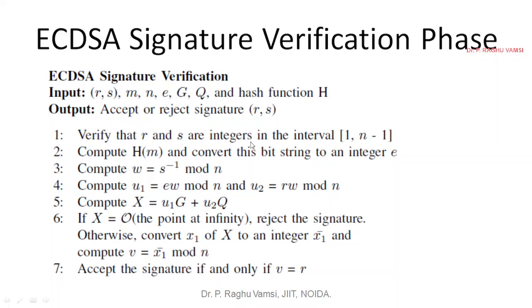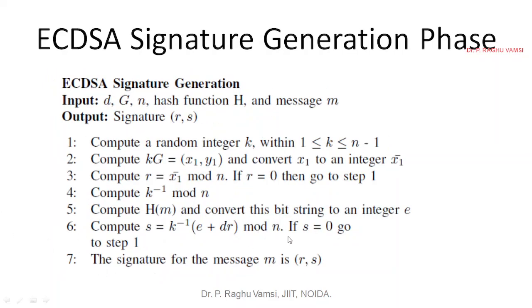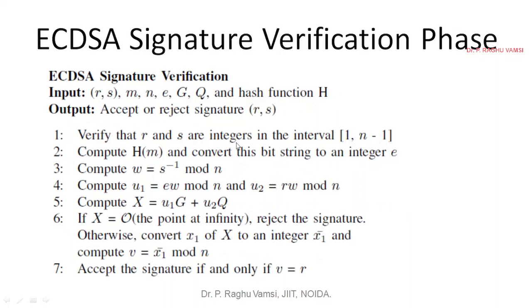Verify r and s are integers in the interval [1, n-1]. That means these r and s values belong to the prime number. Whatever the r and s values will come will fall under the same prime number. If it is more than the prime number then obviously there is a mistake. Because we always perform the modulo operation, automatically everything will fall under the same prime number. If it is greater than that then it is not a valid signature to verify.